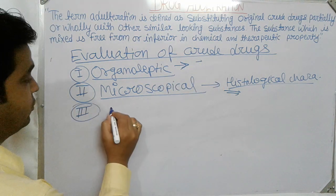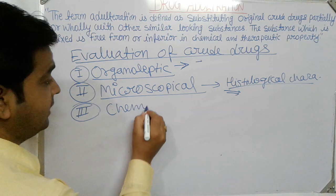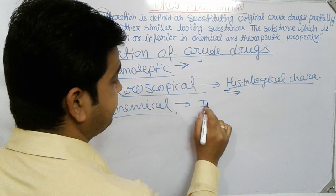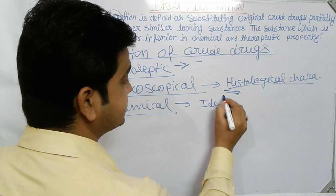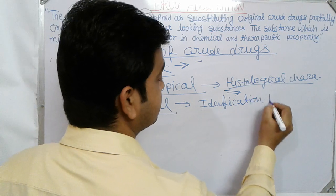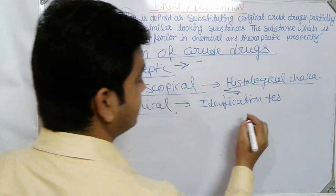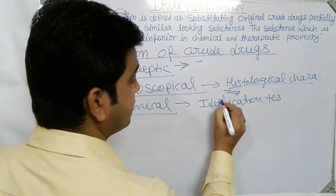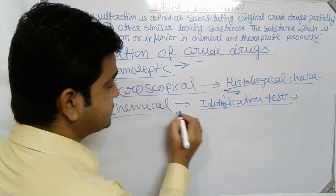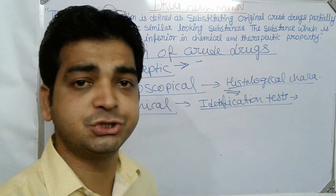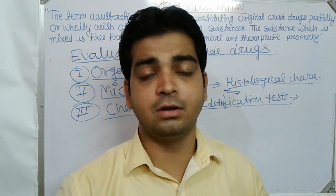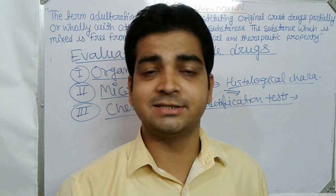All crude drugs have their own chemical constituents — volatile oil-containing crude drugs, alkaloid-containing crude drugs, glycoside-containing crude drugs, and tannin-containing crude drugs. Chemical identification tests help confirm the identity and purity of the crude drug.